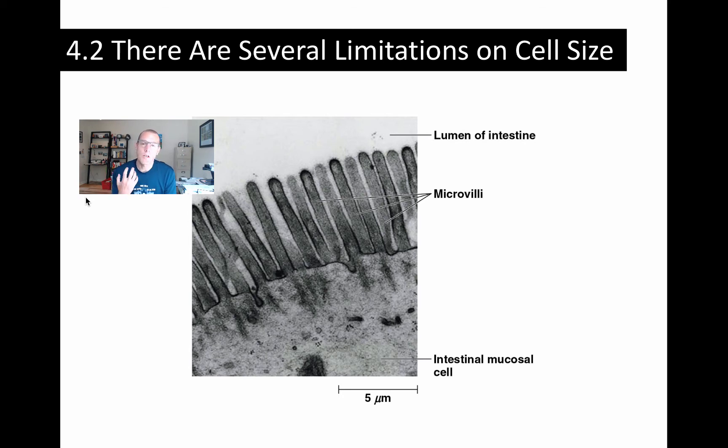You can also think about strategies to increase surface area when you think about the foldings of the inner mitochondrial membrane to make cristae. You can think about increasing surface area when you look at internal thylakoid membranes in chloroplasts. So lots of times where we see cells having adaptations internally to increase surface area to maximize the capture of something.